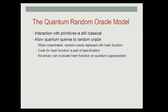The reason that we think this is the correct model is that when we actually go to instantiate the random oracle with a hash function, we give the code of the random oracle to all parties, including the adversary. A quantum adversary, then, with the code can do whatever he wants with the hash function, including evaluating it on a quantum superposition of inputs.